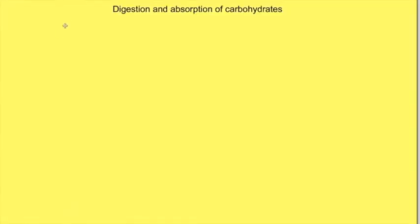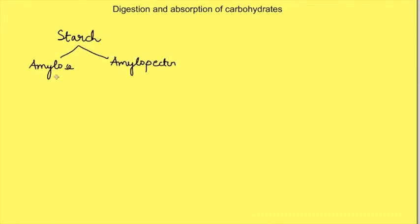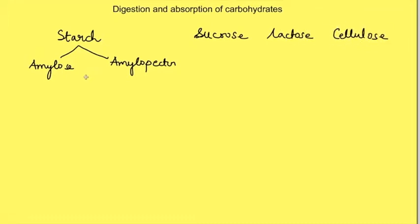Carbohydrates are present in meals mostly as starch, which consists of amylose and amylopectin. These are polysaccharides consisting of glucose monomers. Along with these, there are certain disaccharides like sucrose and lactose, and there can also be presence of plant cellulose. Before absorption of carbohydrates can occur into the blood, they are broken down into monosaccharides.